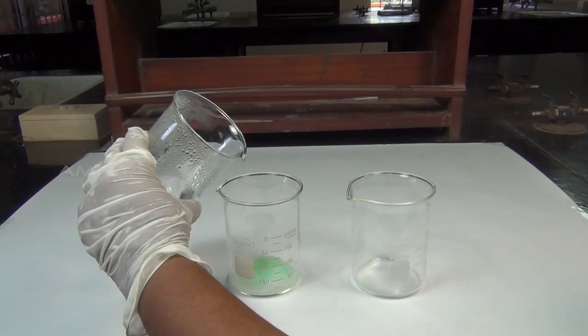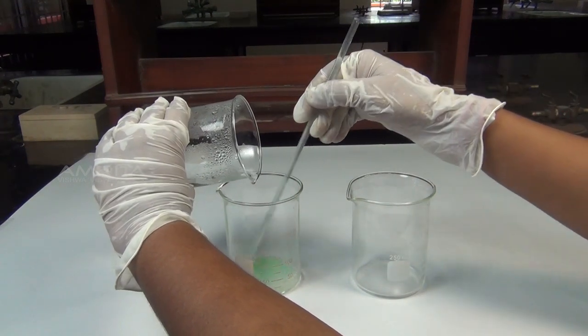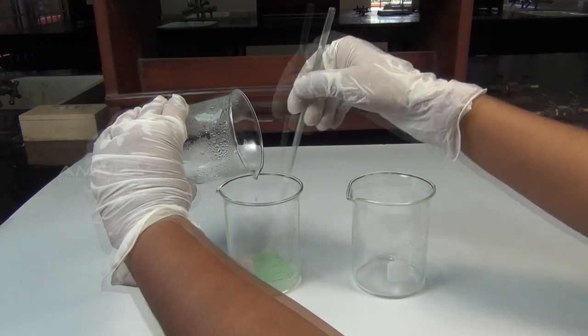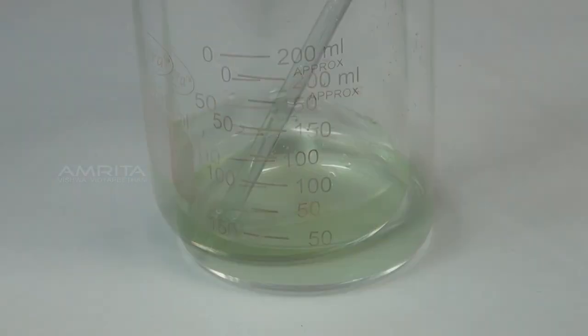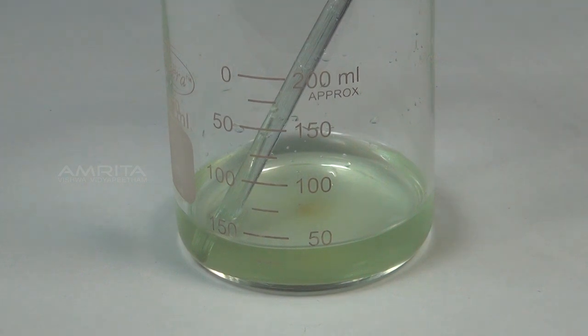Add the boiling hot water to the contents in the first beaker in small installments at a time. Stir the contents of the beaker with a glass rod until the salts have completely dissolved.